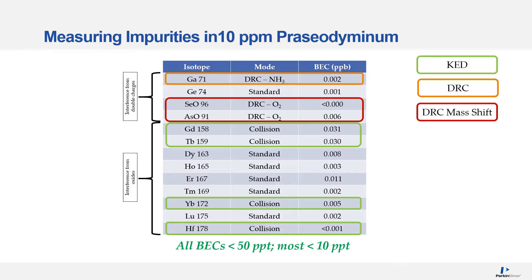Measuring impurities in 10 ppm praseodymium, you can see the interferences from the double charges. Gallium is now going to be best measured in a DRC ammonia mode rather than an oxygen mode. However, selenium and arsenic are again best mass shifted with a DRC oxygen mode. The interferences from the oxides will be a mixture between standard mode and collision mode.